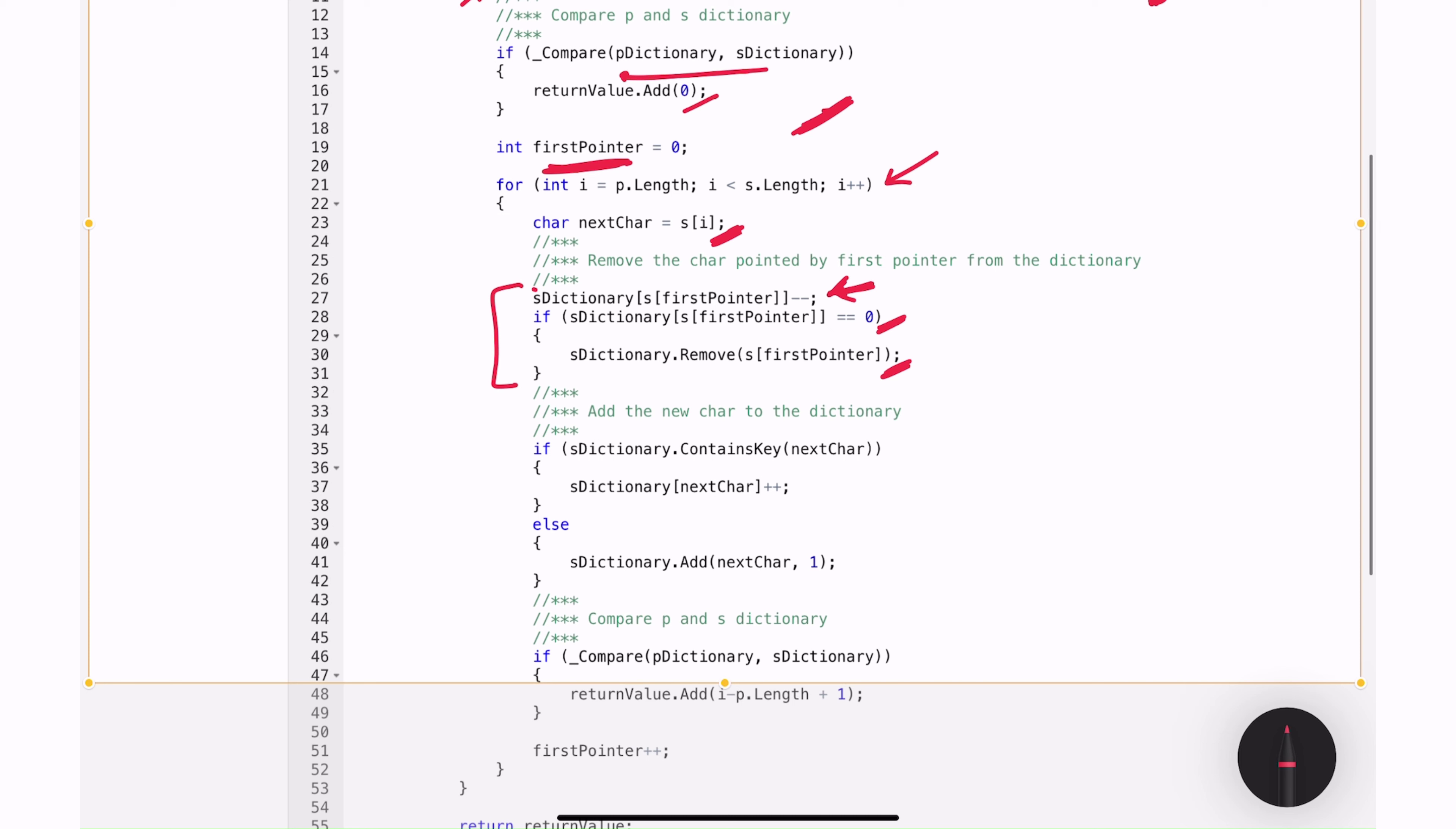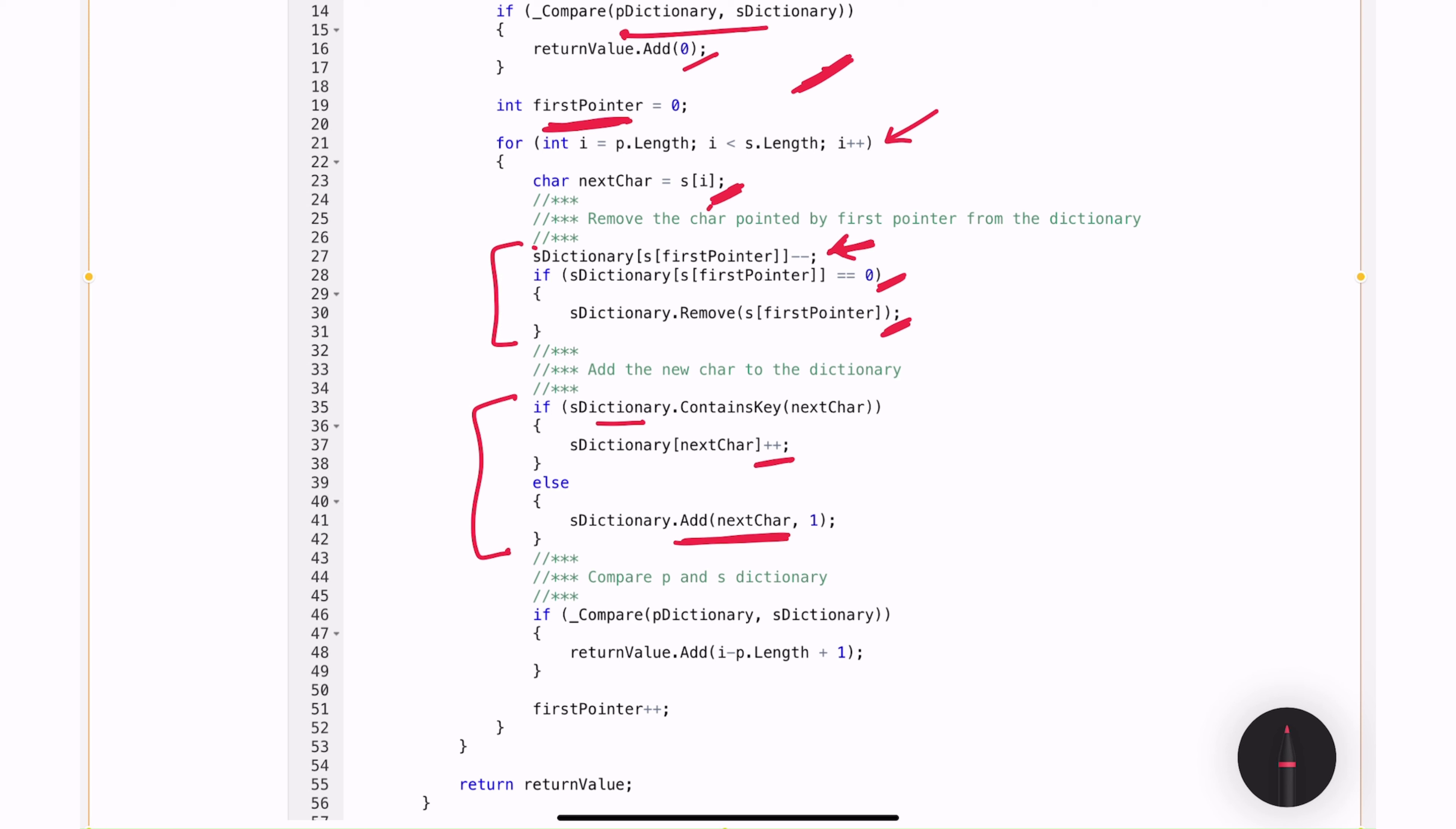After this, the next step is to add the new character which we identified on line 23. So I'm checking if the character exists in the dictionary. If it exists, then I just need to increment the count. And if it does not exist, then I'm adding a new entry with the count 1. And after that, I'm calling this compare method again, passing the status of P dictionary and S dictionary.